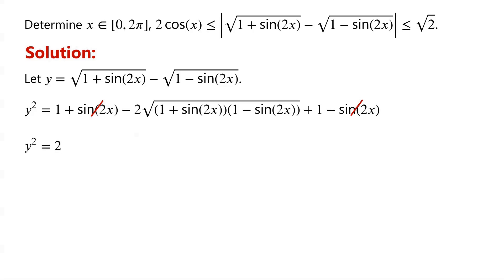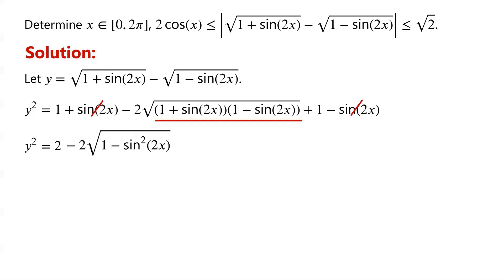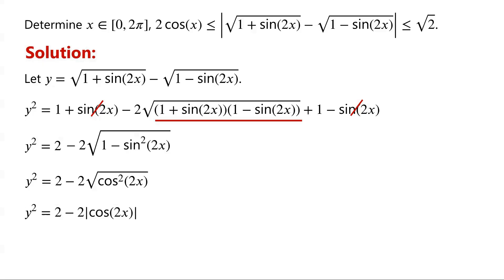1 + 1 equals 2. The product (1 + sin 2x)(1 - sin 2x) equals 1 - sin²(2x), which equals cos²(2x). So the square root of cos²(2x) equals the modulus of cos(2x).